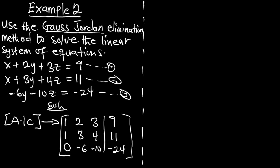Here we are to convert everything on the principal diagonal to 1, then every other element to 0. Let's try to do that.